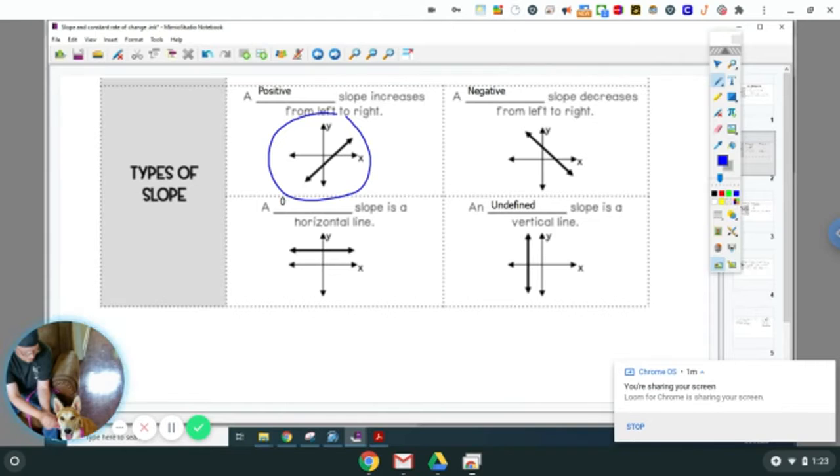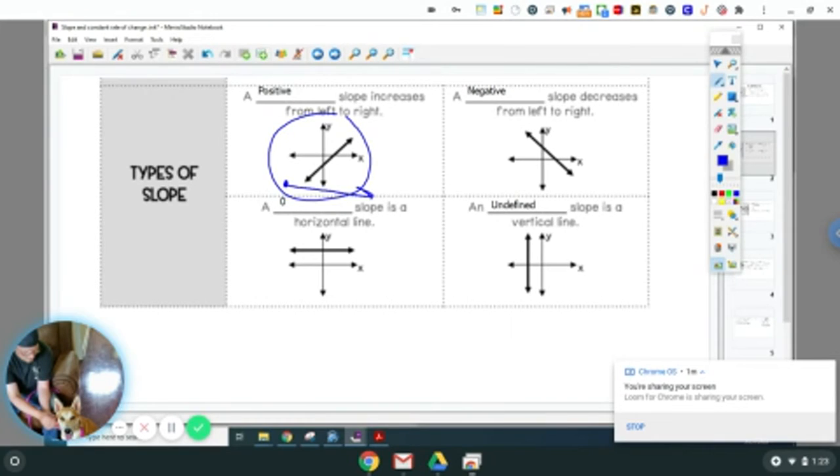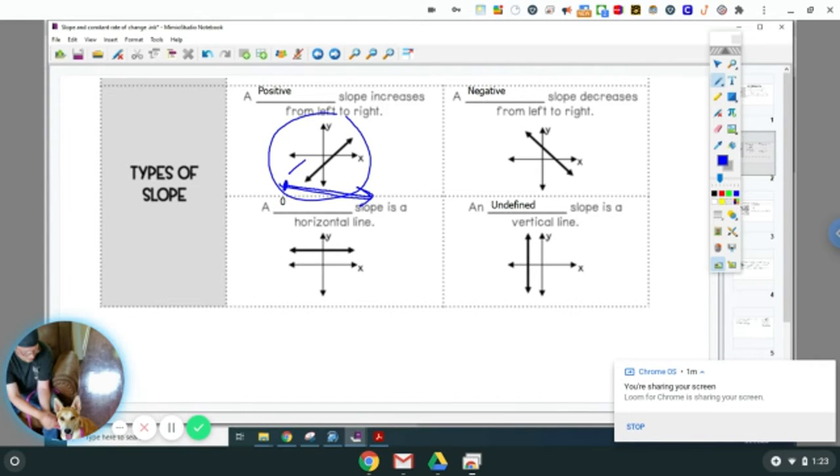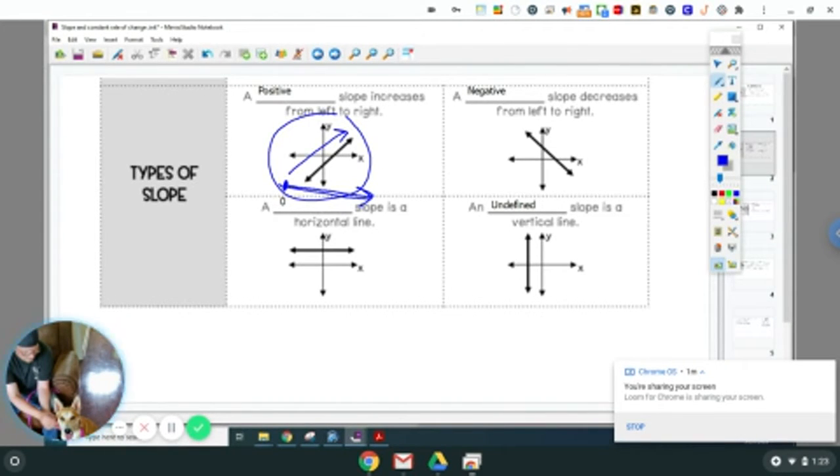So when you see this graph, start here at the left and go right. So when you start here at the left and you go right, your line is going upwards, hence positive slope.